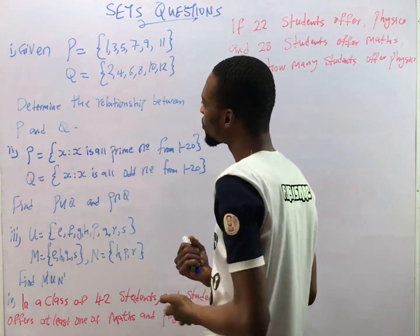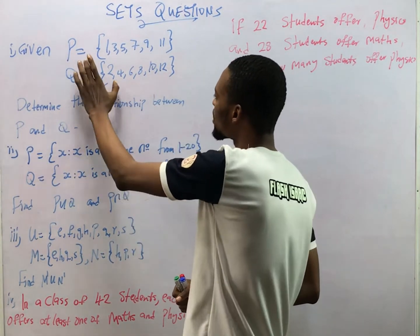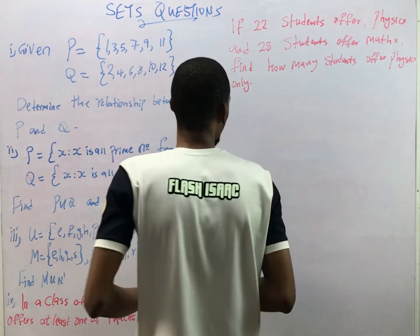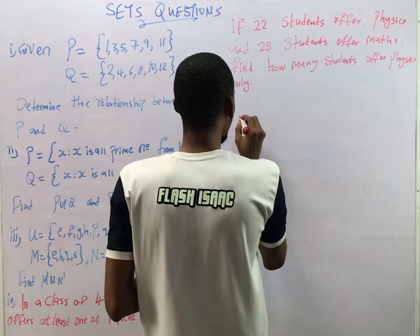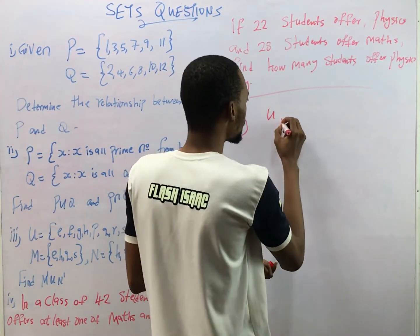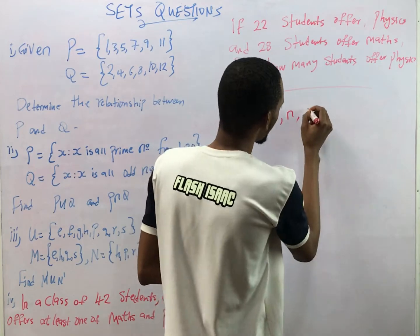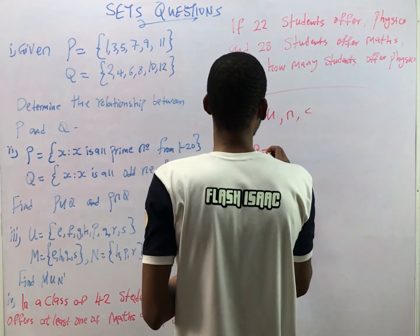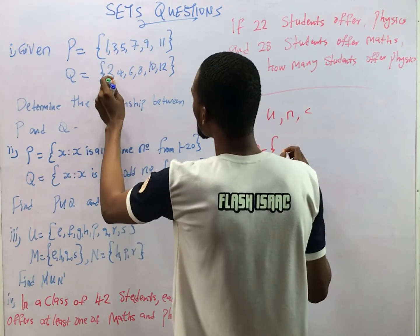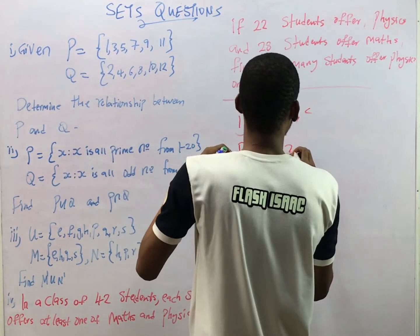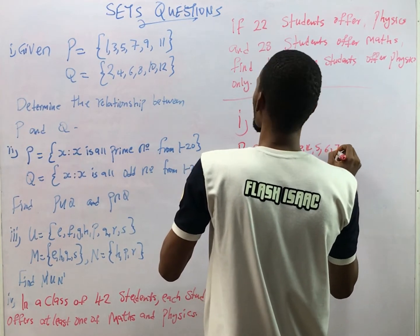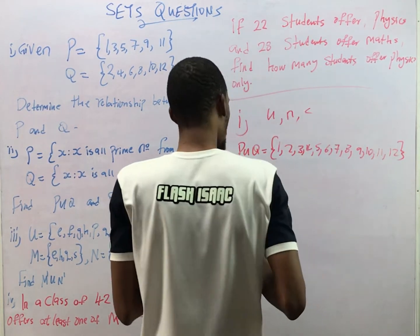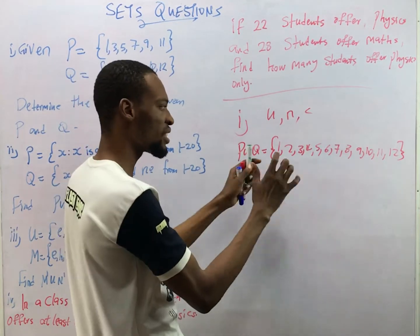The question says: given these two sets, determine the relationship between P and Q. So we are given two sets, set P and set Q. Talking about sets, the common things to look out for are union, intersection, and complements. The union of the sets — P union Q — equals {1, 2, 3, ...}. Union means adding everything together.